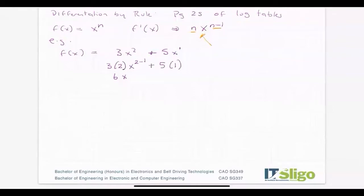So I get 5 times 1 times 1, giving me 6x + 5 as my final answer.